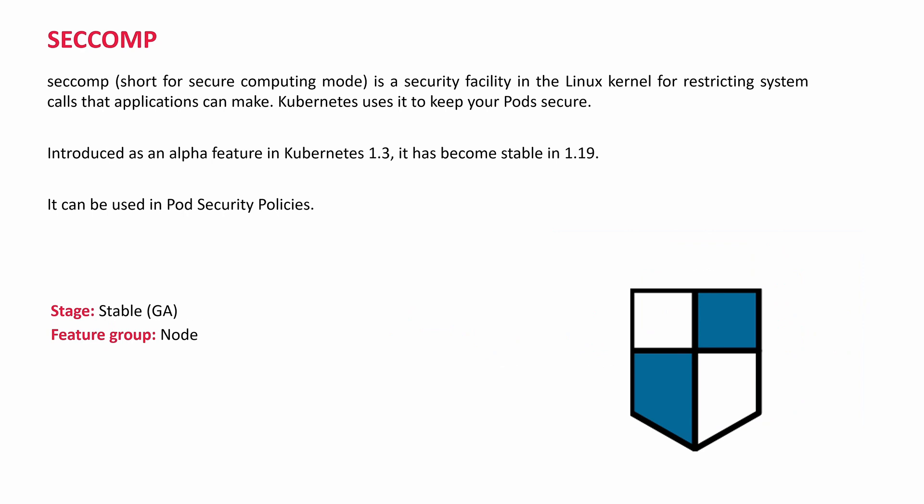Seccomp is a Linux kernel security facility. It helps the system restrict applications from making system calls. Kubernetes uses it to keep your pods secure. It was an alpha feature in 1.3. Now it became stable in 1.19. Seccomp can be used in pod security policies to direct the pod on how to make those system calls. Feature group: Node. Stable.